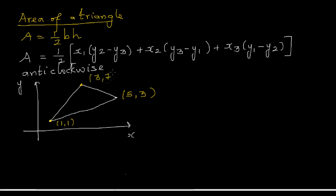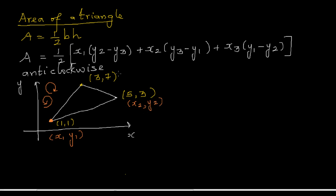We have to identify x1 y1, x2 y2, and x3 y3. The way to identify them is that we must go in an anti-clockwise (counterclockwise) direction. You can start at any point. Starting at the first point, that's x1 y1. Going anti-clockwise, the next point is x2 y2, and the last is x3 y3. If you go clockwise, your area will come out negative.